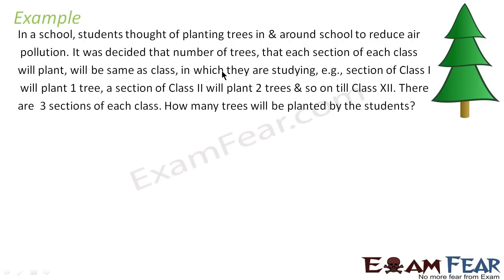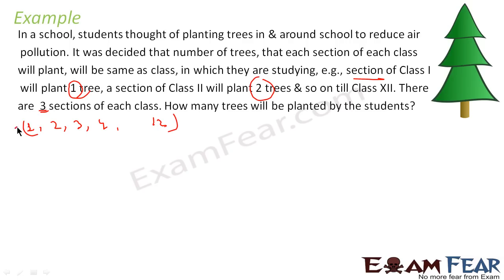In a school, students thought of planting trees to reduce air pollution. It was decided that the number of trees each section of a class will plant equals the class number. There are three sections of each class. So class 1 plants 3×1=3 trees, class 2 plants 3×2=6 trees, class 3 plants 9 trees, and class 12 plants 3×12=36 trees.